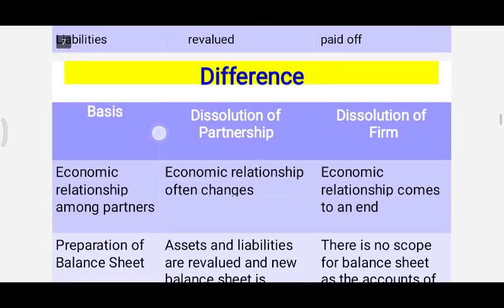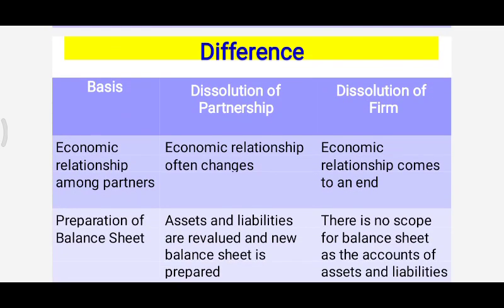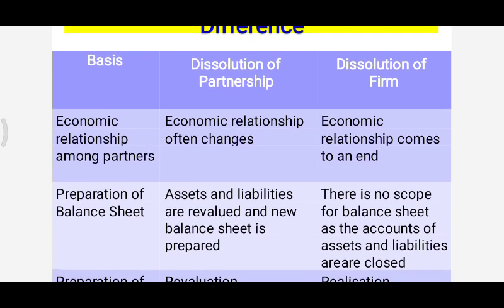The next basis is economic relationship. In dissolution of partnership, the economic relationship changes due to change in profit-sharing ratio. But under dissolution of firm, the economic relationship between the partners comes to an end forever. Next is preparation of balance sheet — in dissolution of partnership, assets and liabilities are revalued, a revaluation account is prepared, and a new balance sheet is also prepared. Under dissolution of firm, there is no scope for preparation of a balance sheet because all asset and liability accounts have been closed forever.